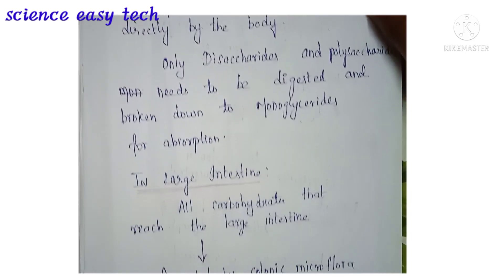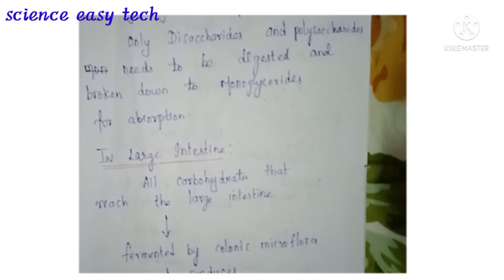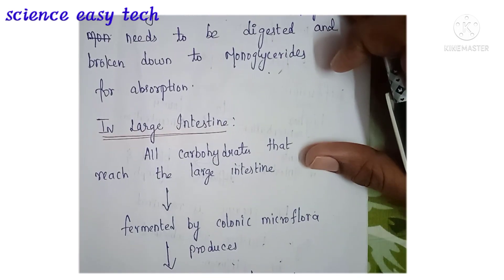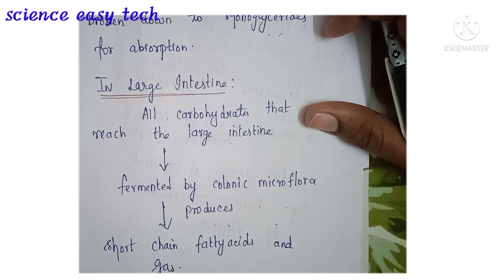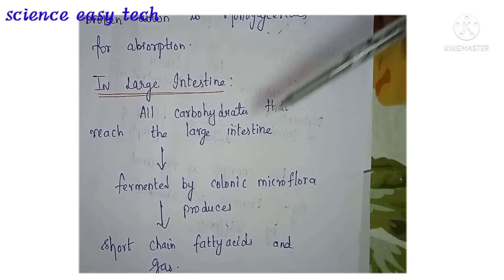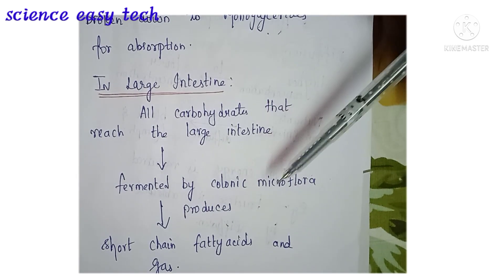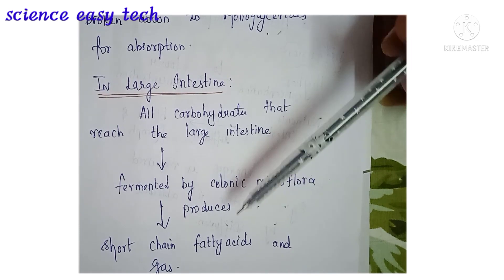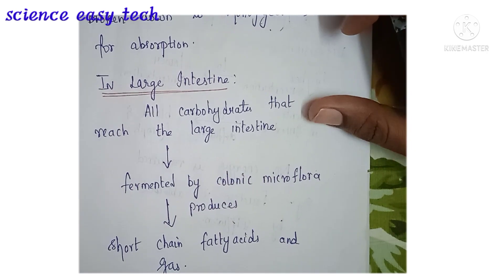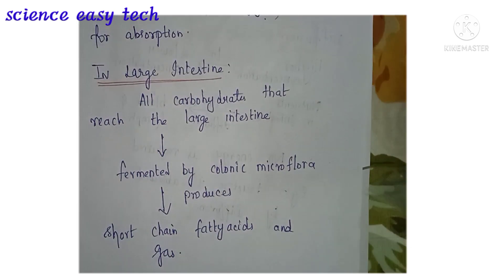In the large intestine, all the carbohydrates that reach it — the fibers and undigested carbohydrates — are fermented by the colonic microflora. This produces short chain fatty acids and gas, which are excreted in the feces.